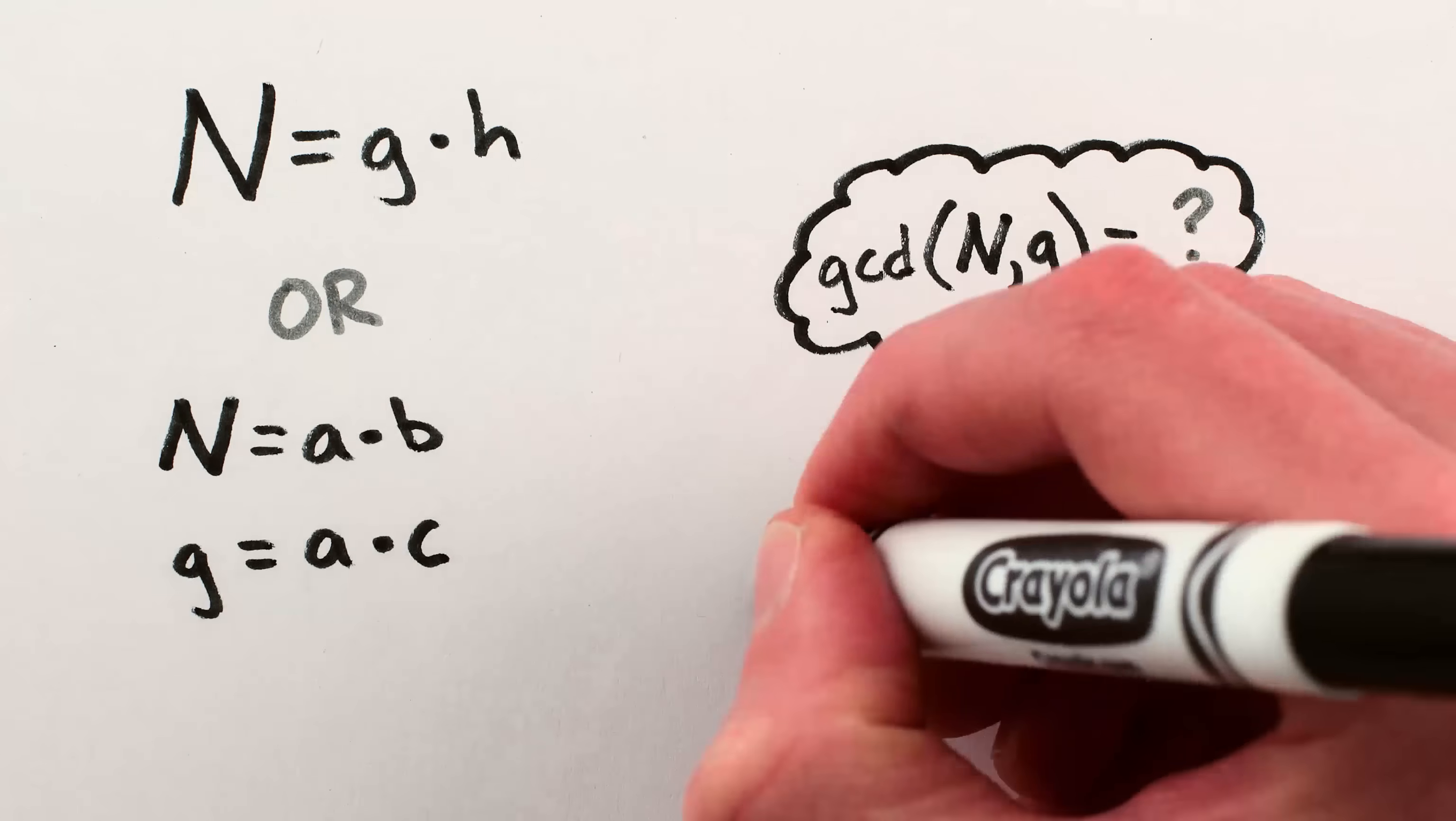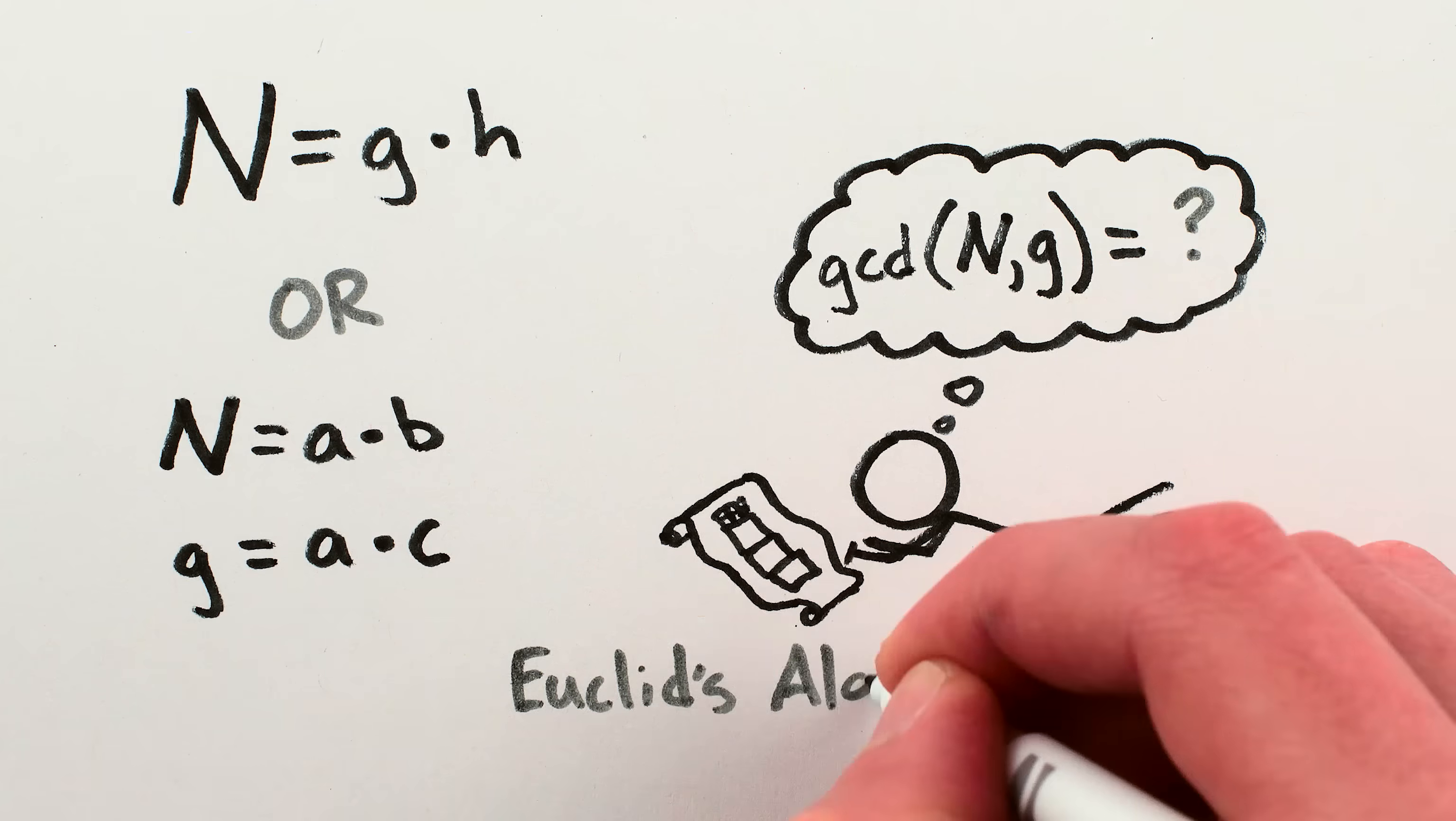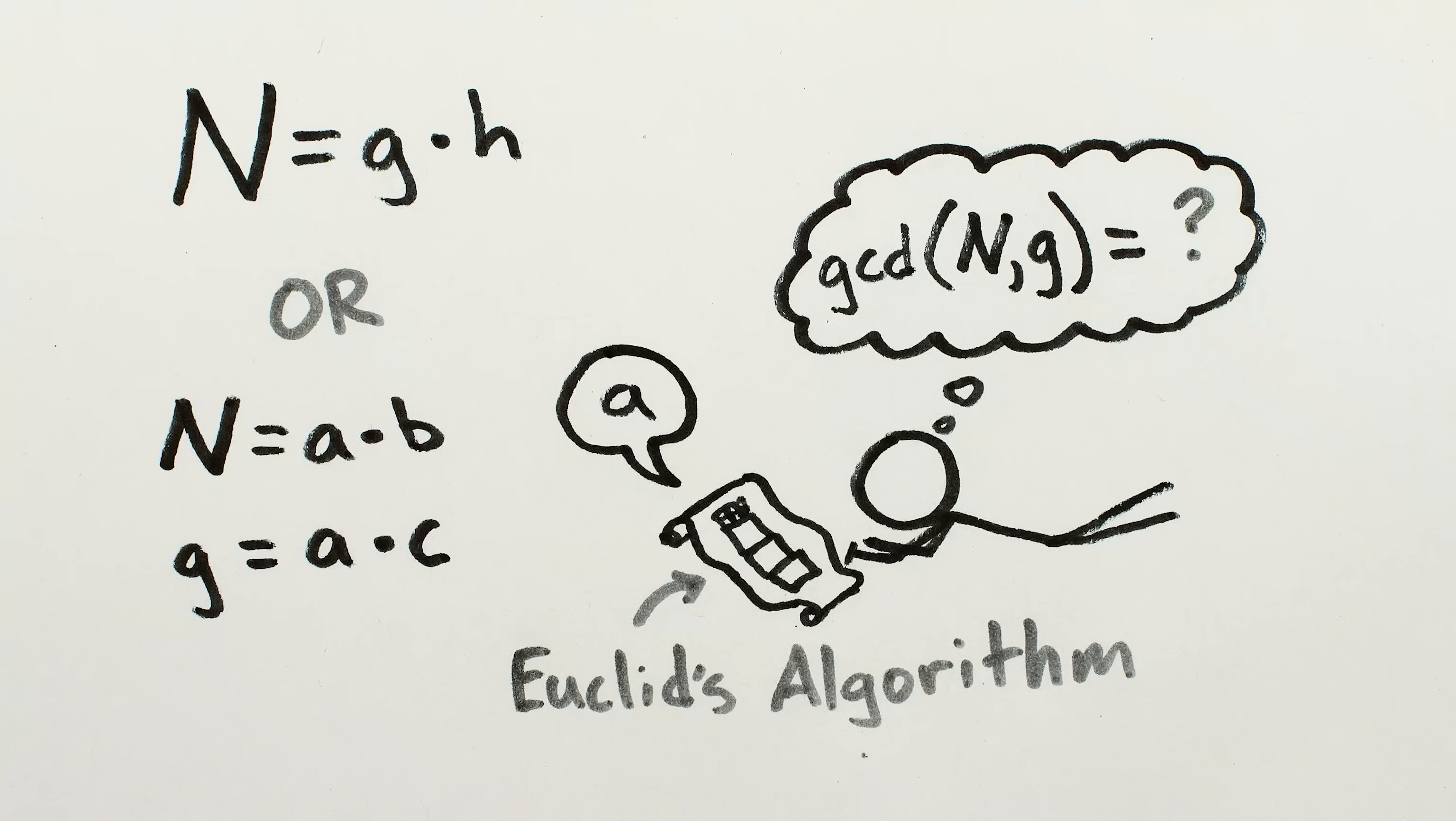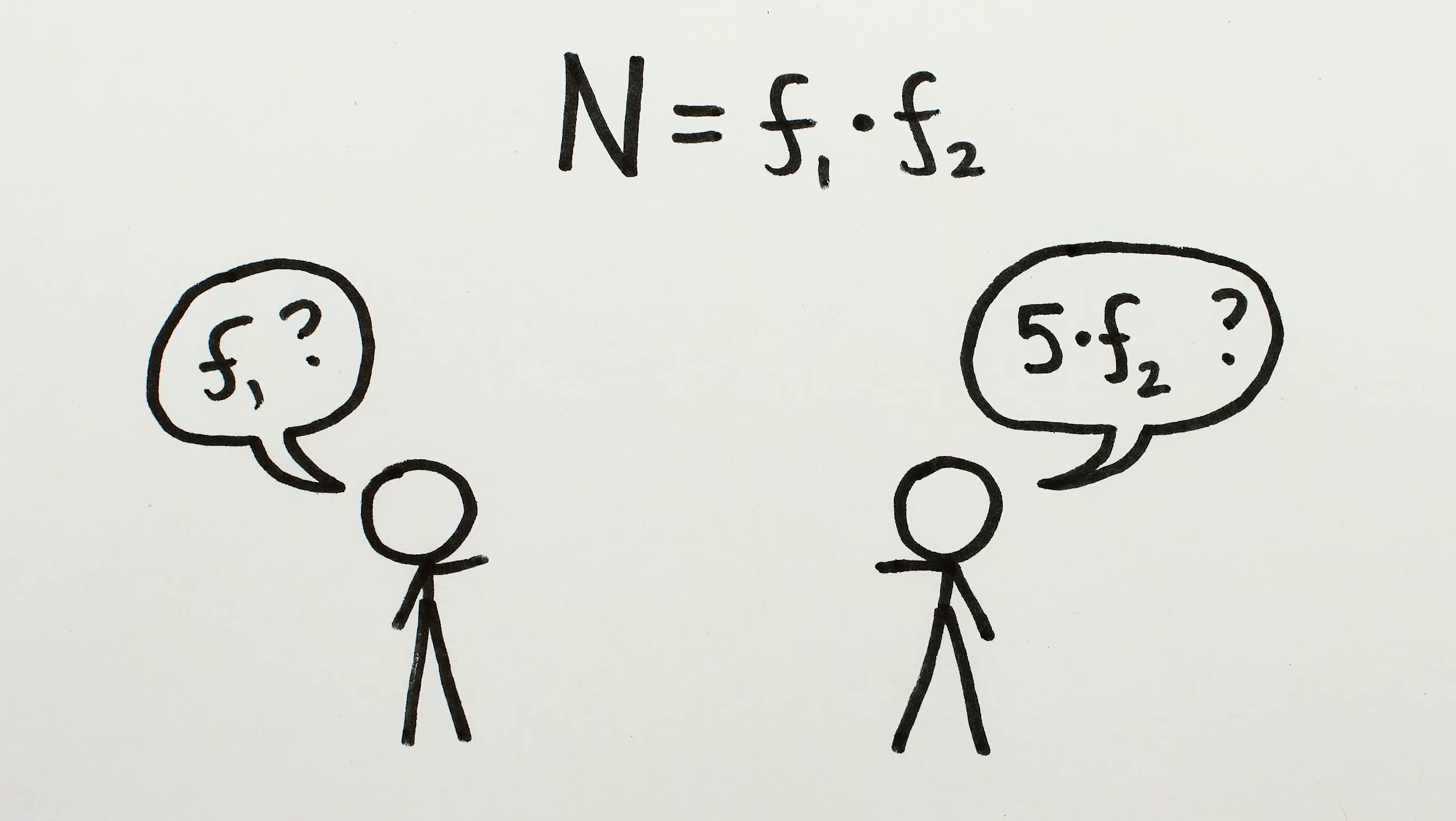Numbers that share factors are okay because there's a 2,000-year-old method to check for and find common factors. It's called Euclid's algorithm, and it's pretty darn efficient. All this is to say that to find a factor of n, we don't have to guess a factor of n. Guessing numbers that share factors with n is okay, too, thanks to Euclid.